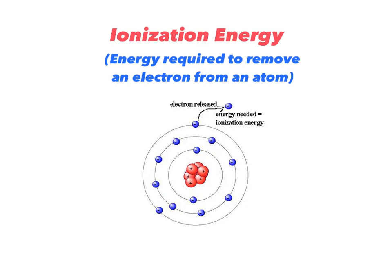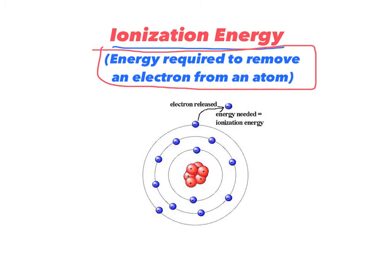The last trend we're going to look at is ionization energy — the energy required to remove an electron from an atom. It's how much energy is needed to release an electron. The tougher it is to pull an electron off, the more energy is needed. There is a first ionization energy, which is for the first electron removed, and a second ionization energy for the second. In this class, we're just going to be dealing with first ionization energy.